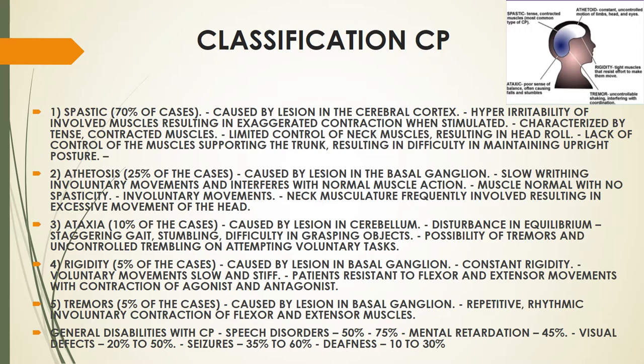Rigidity — as the name suggests, the muscles are rigid. Then tremors are uncontrollable shaking that interfere with coordination. Ataxia involves a poor sense of balance and often causes falls and stumbles.